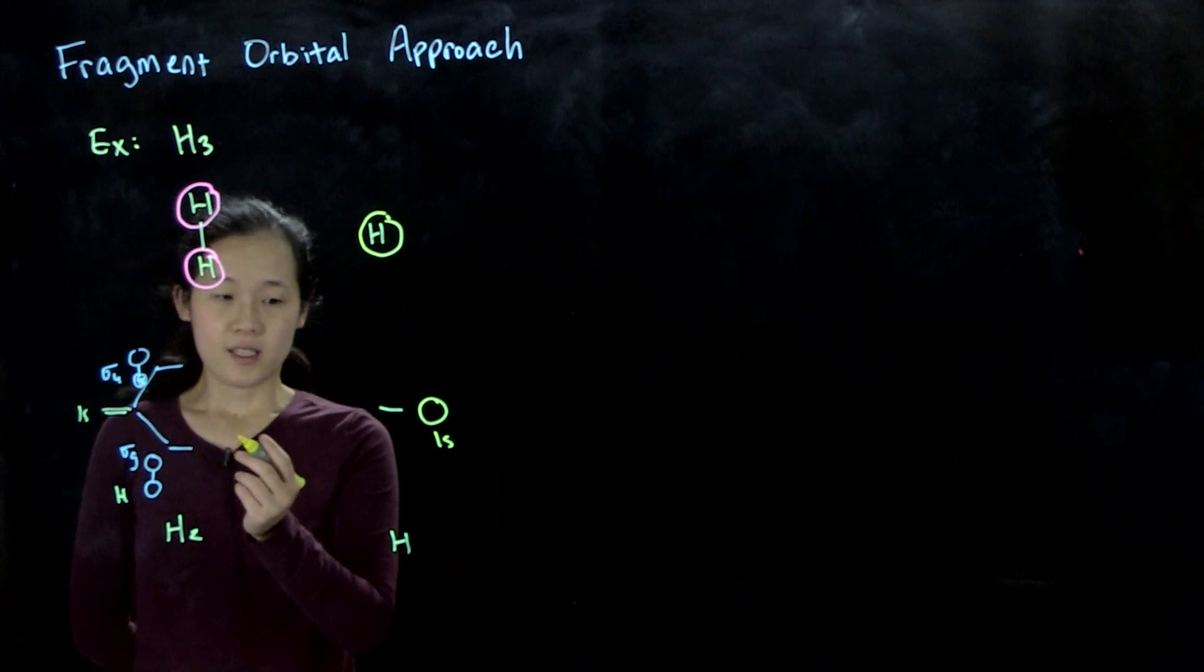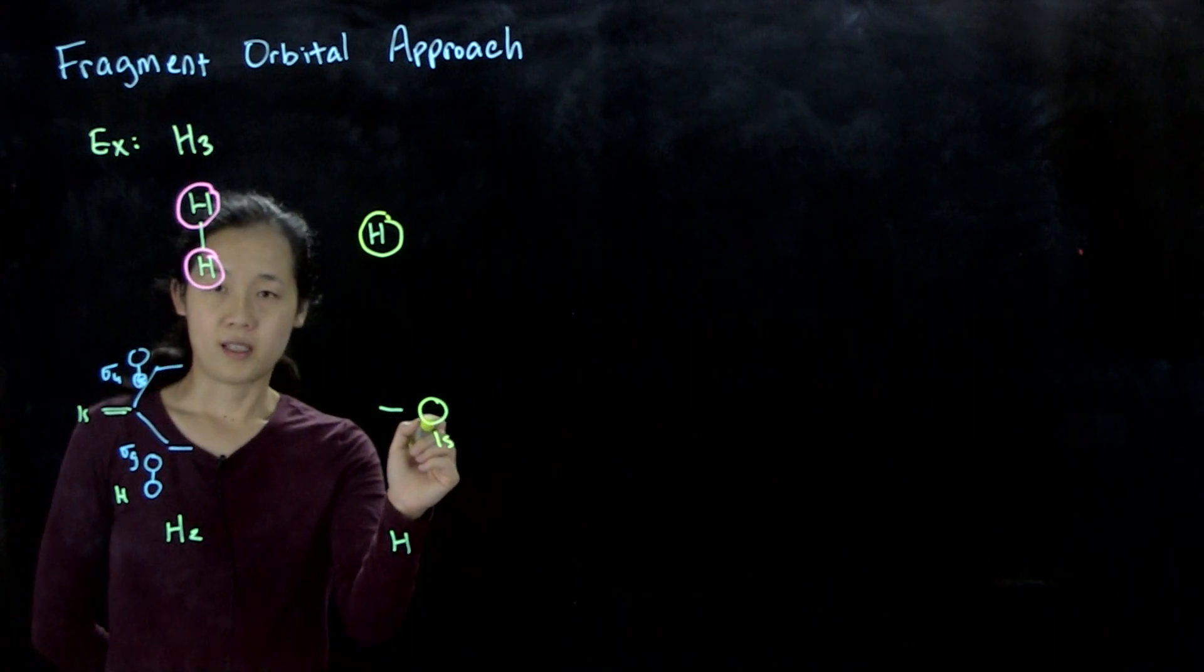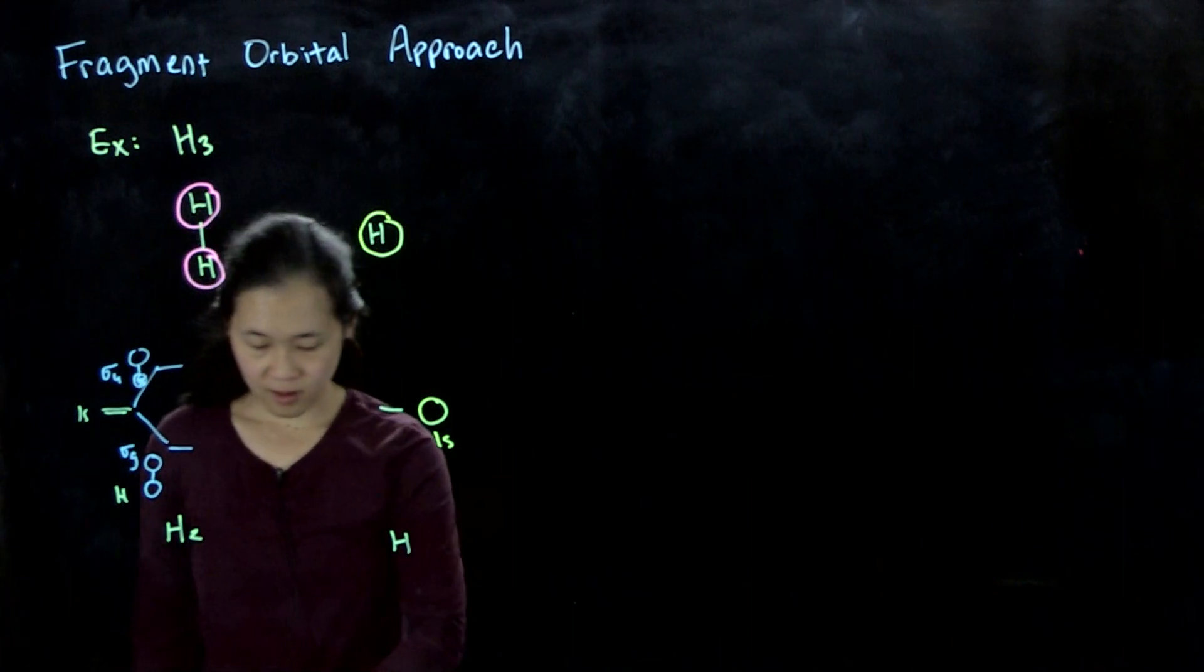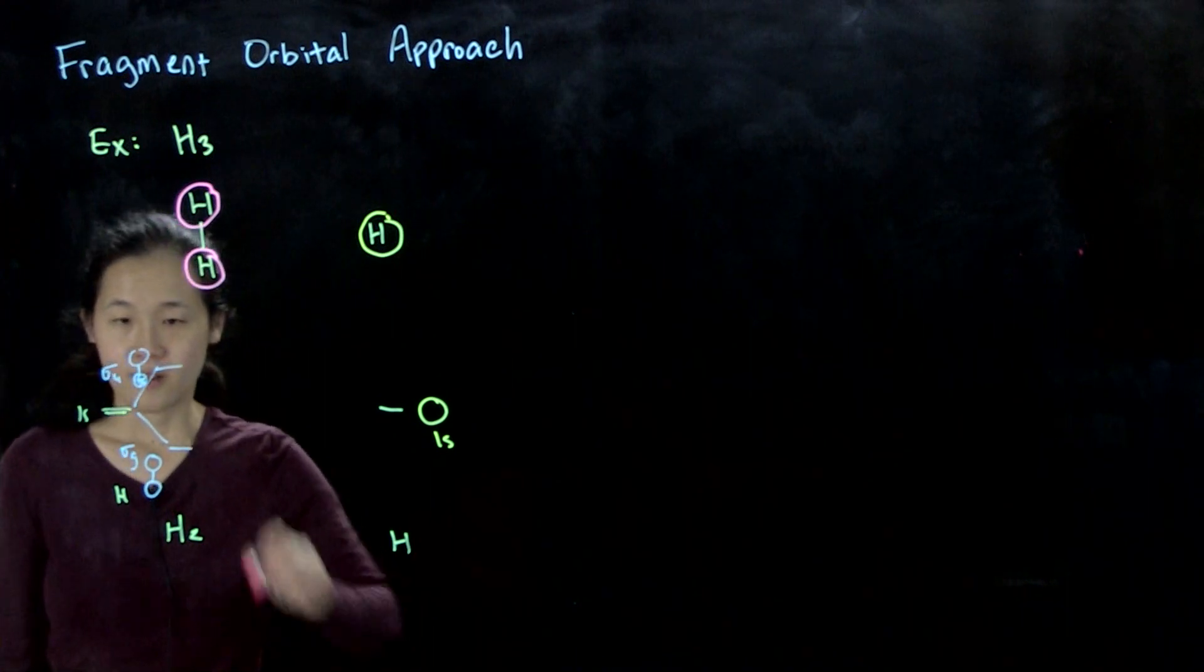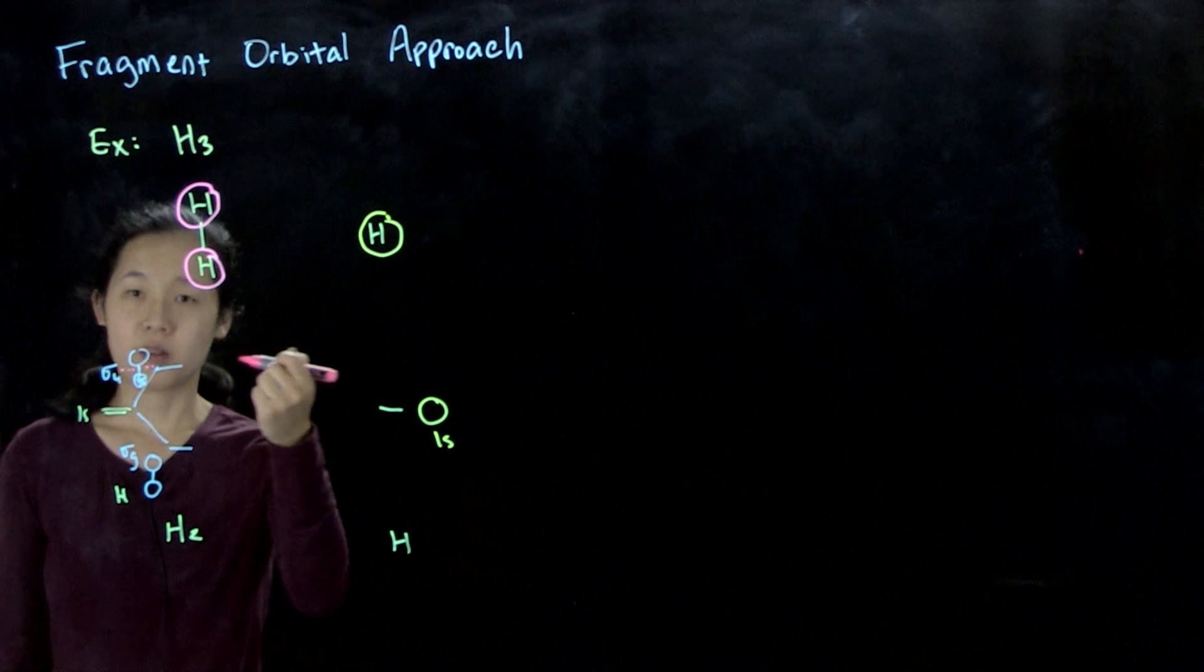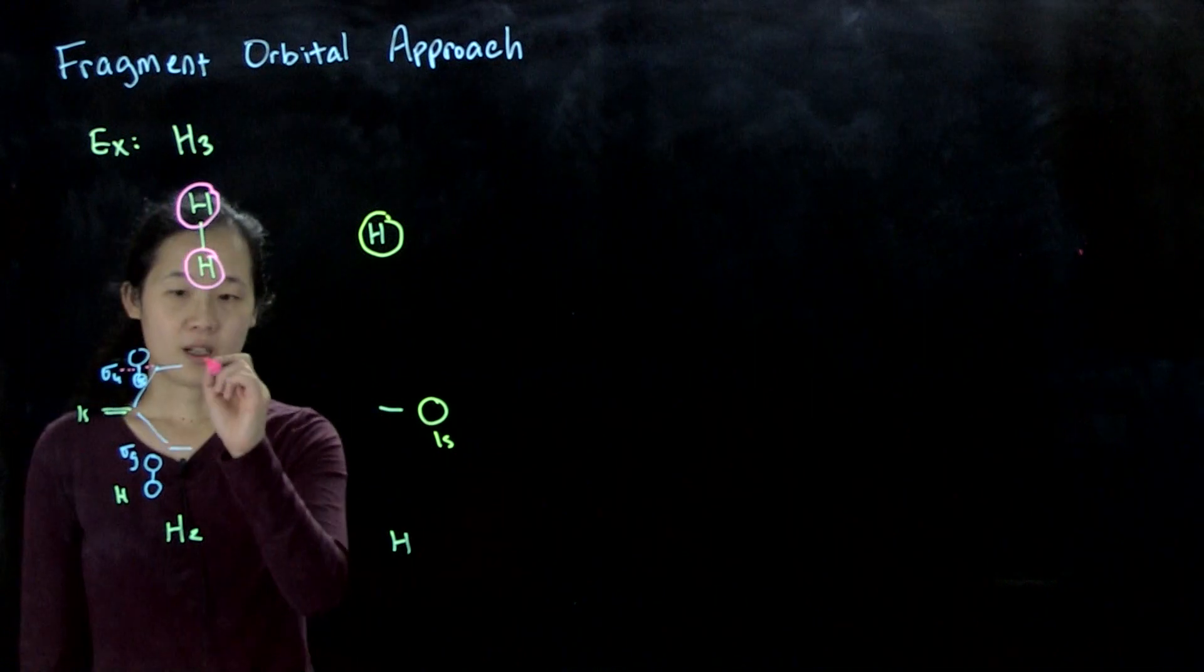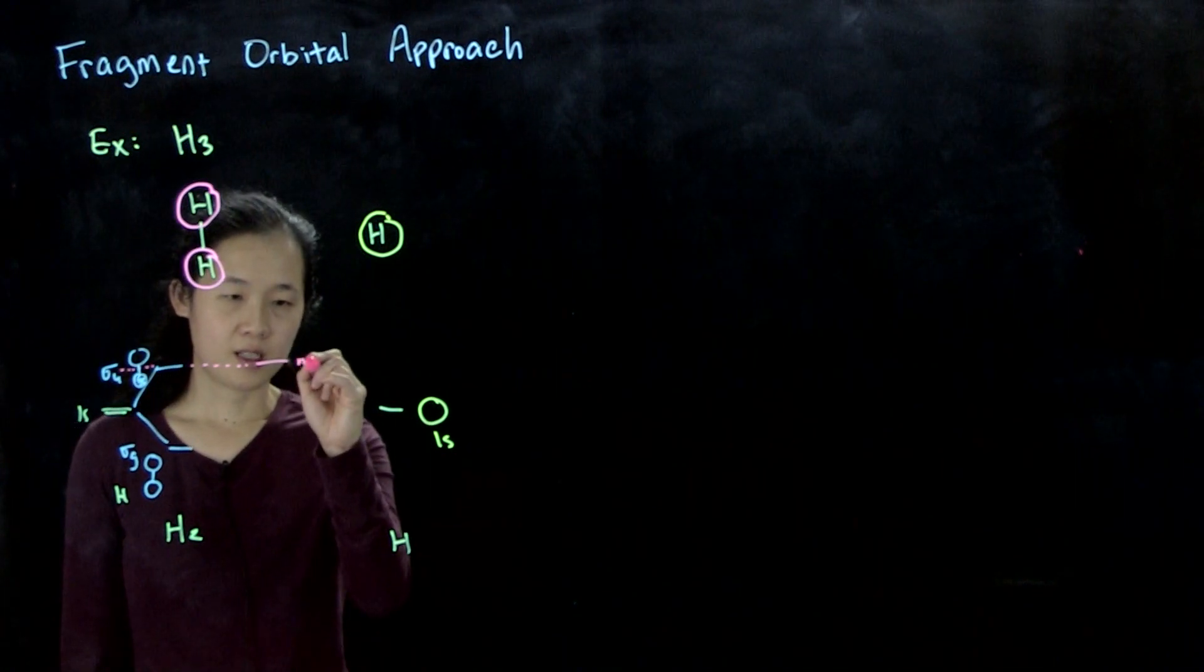One thing is, we know that this sigma u cannot interact with this 1s, because this orbital is coming right down that nodal plane. This has a nodal plane, which I will draw right here. This sigma u has a nodal plane here. Because it's a nodal plane, as we approach down the nodal plane, the hydrogen atom is always in between on the nodal plane, so there's no interaction. This is going to be non-bonding. We have to have an orbital here. This is non-bonding, technically.